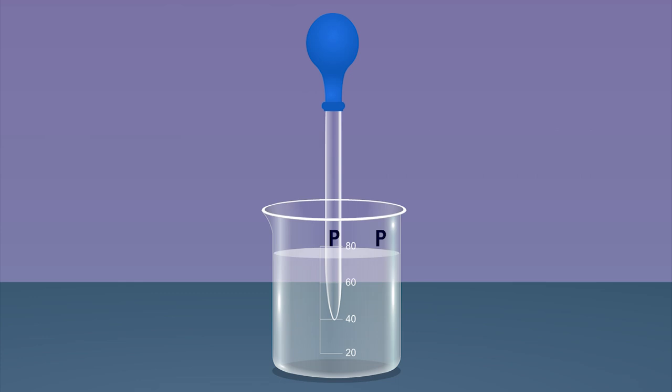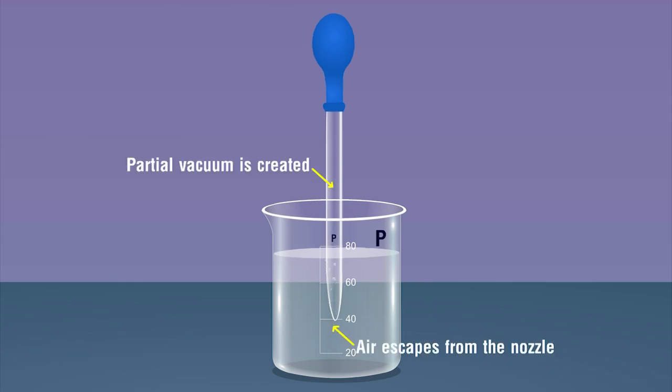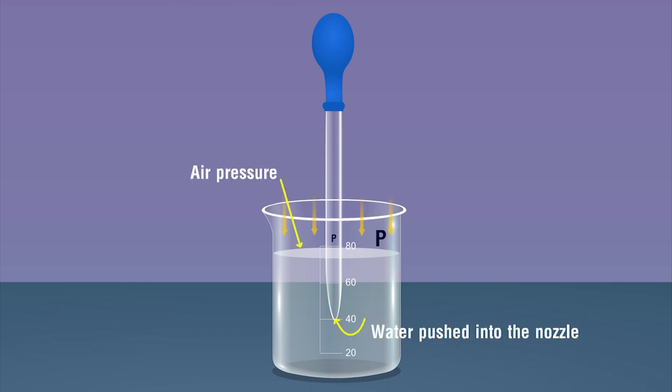When the bulb is pressed, air from the nozzle of the dropper escapes from it and a partial vacuum is created inside the nozzle. Pressure inside the dropper decreases. On releasing the bulb, water rushes into the nozzle to fill this vacuum.